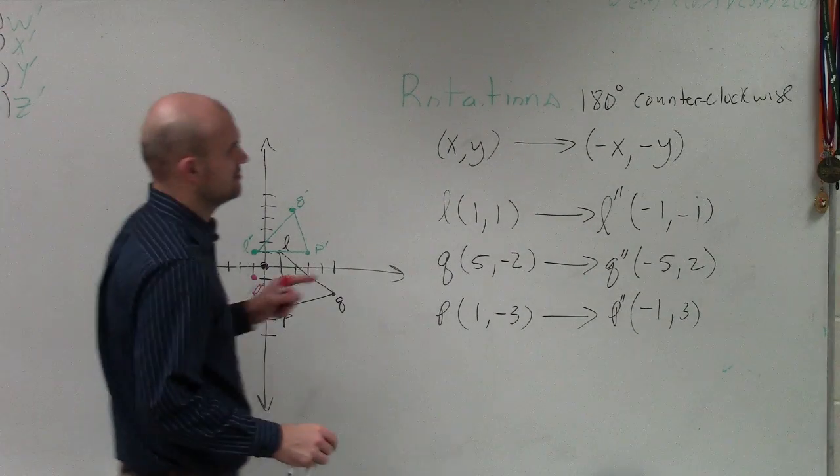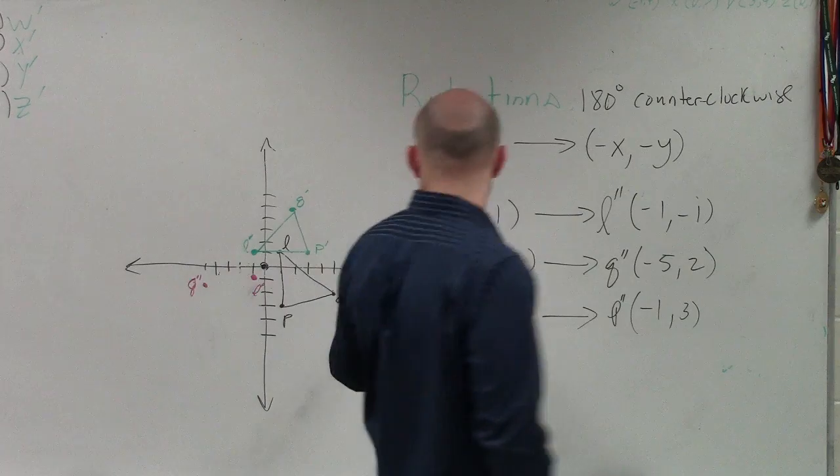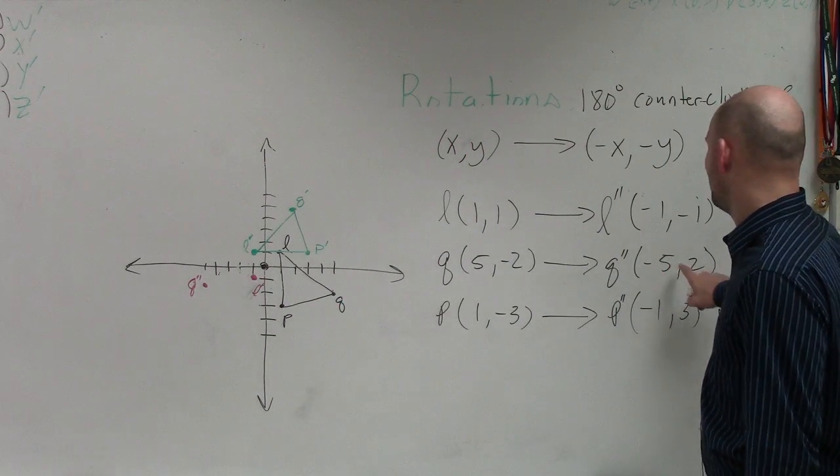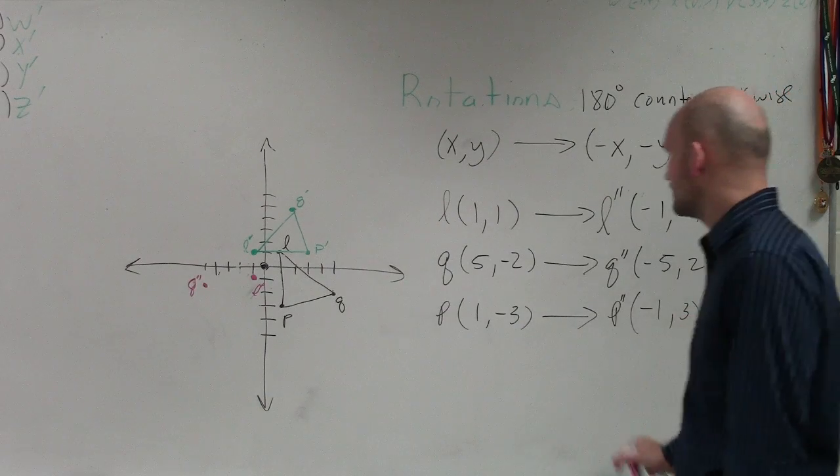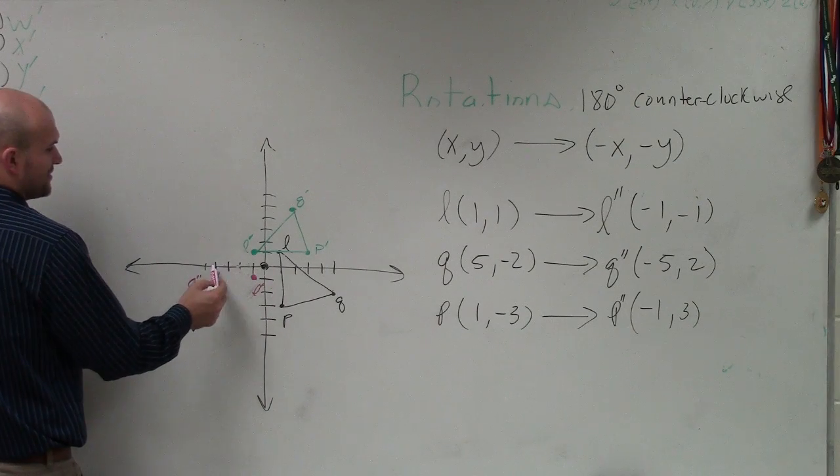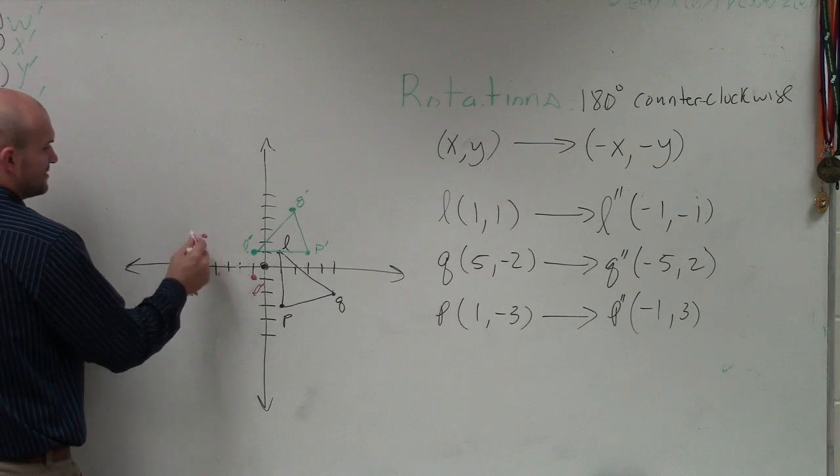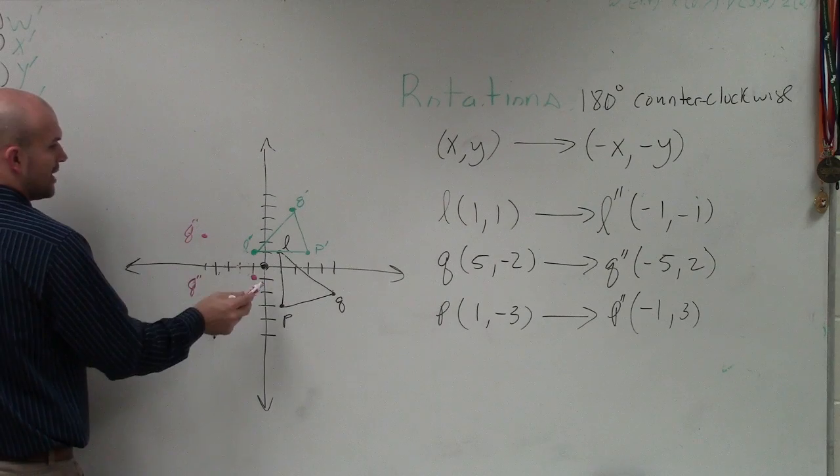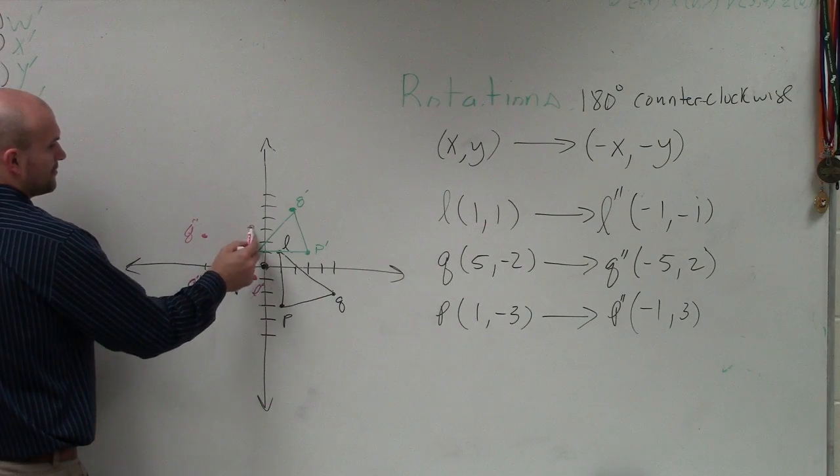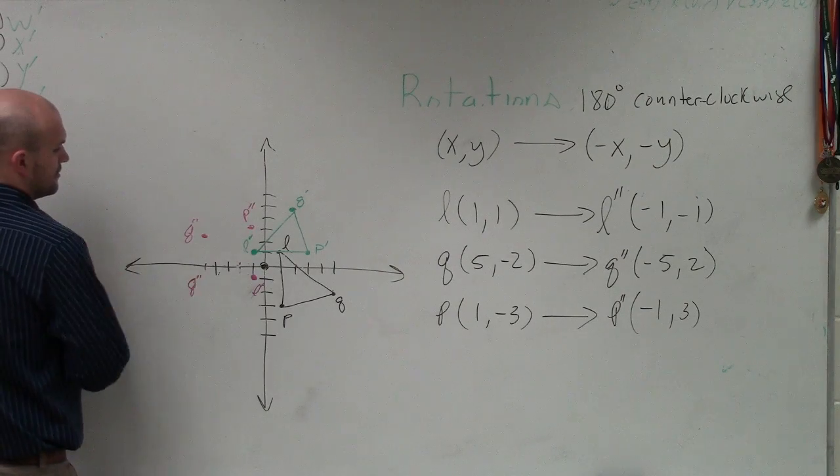That's L, 1 comma 1 is now negative 1, negative 1. That should be negative 5, 2. That should be negative 1, 3. Oh, that's negative 5 up 2. Negative 5, 1, 2, 3, 4, 5, up 2. That's Q double prime. And P would be negative 1 up 3, 1, 2, 3.